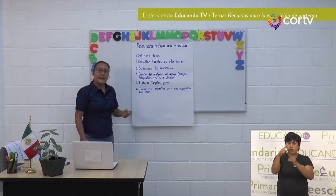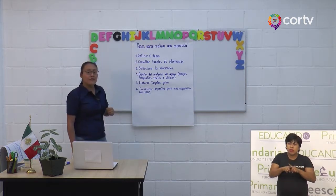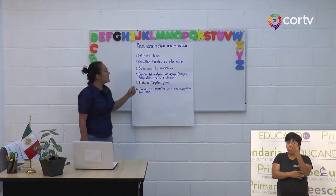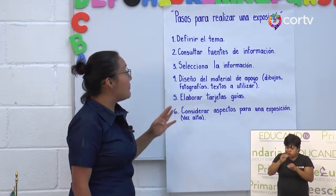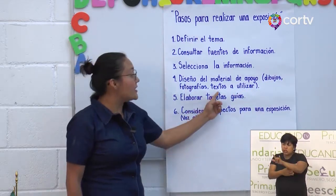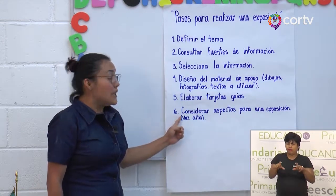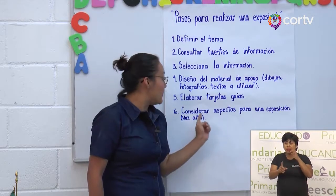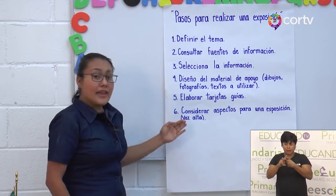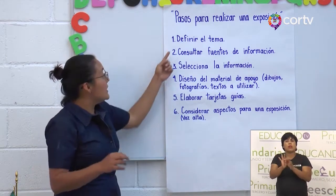Número uno: definir el tema. Número dos: consultar fuentes de información. Tres: seleccionar la información. Cuatro: diseñar el material de apoyo; estos pueden ser dibujos, fotografías, textos a utilizar, elaborar tarjetas guías y considerar aspectos para una exposición en voz alta. A partir de esto, vamos a ir desglosando algunos puntos importantes y principales.